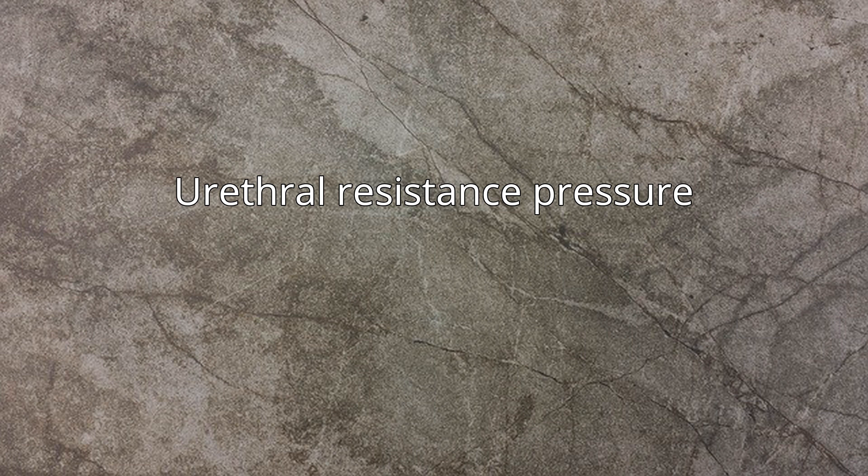On the other hand, static lateral pressure helps prevent involuntary dribbling. Decline in urethral resistance pressure is one of the contributing factors in some forms of incontinence — for example, stress incontinence as a result of atrophy in menopause.